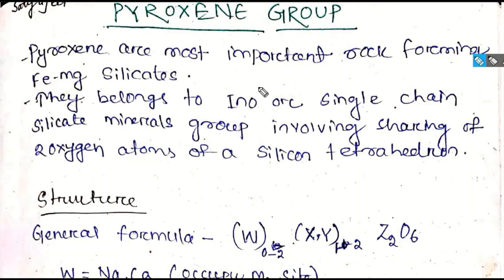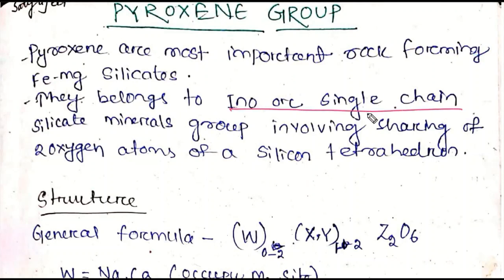First, the pyroxene group. Pyroxenes are the most important rock-forming Fe-Mg silicate minerals. They belong to the inosilicate, or single chain silicate structure. The silicate structures include nesosilicate, chain silicate, cyclosilicate, sorosilicate, and tectosilicate. Pyroxenes belong to the single chain silicate structure.